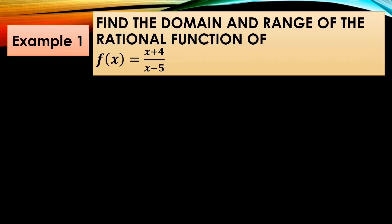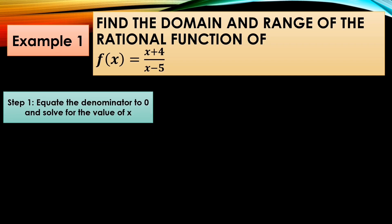Example number one: find the domain and range of the rational function f(x) = (x + 4) over (x − 5). To find the domain, equate the denominator to zero. So your function is f(x) = (x + 4) over (x − 5). Equate the denominator to zero: x − 5 = 0, so x = 5.